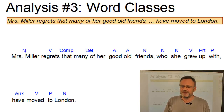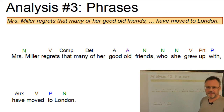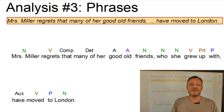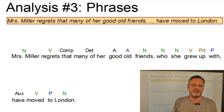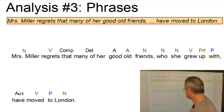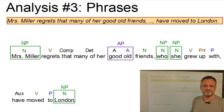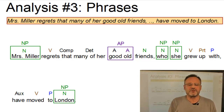Let us now group these simple categories into constituents and perform a phrasal analysis. I marked the lexical or open class categories in special colors because they will eventually be heads of particular phrases. Let us work out the phrasal categories in a hierarchical fashion this time. At the lowest level we have four noun phrases: Mrs Miller, London, who, and she — and all noun phrases only consist of a head.